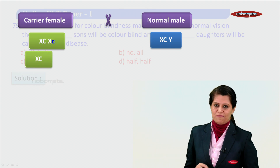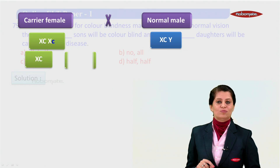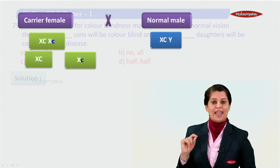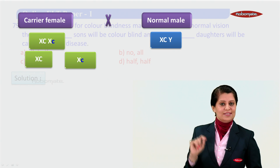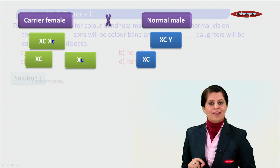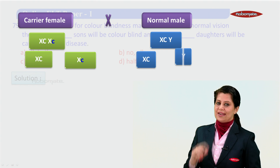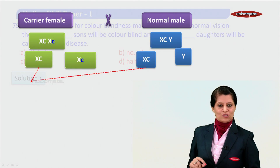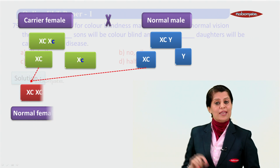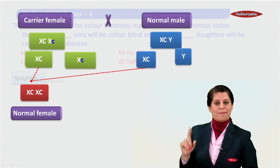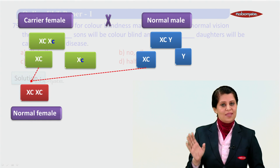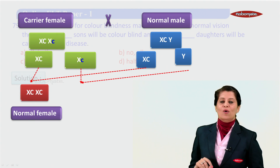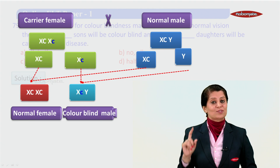When we cross these two, what gametes will they form? The carrier female will form two types of gametes: X^C and X^c (with the disease gene). The normal male will have X^C and Y. Crossing these, the first combination gives us the genotype X^C X^C — that means a normal female.